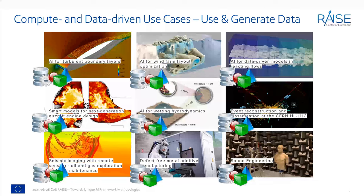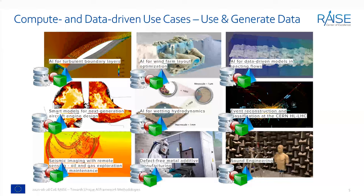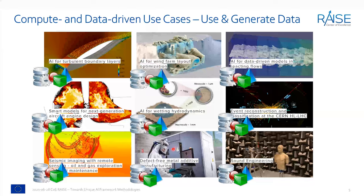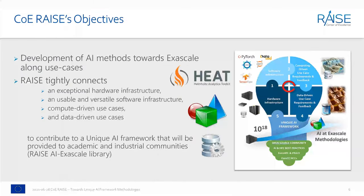We have nine use cases in COE RACE, ranging from traditional computational fluid dynamics — such as turbulent boundary layers — up to data-generation use cases in sound engineering where data is created in an echo chamber. They all create lots of data. This is where our AI modeling will start, to understand what data we can use to help provide insights in all of these different use cases — including wind farm modeling and 3D printing.